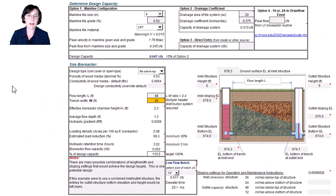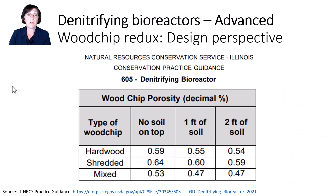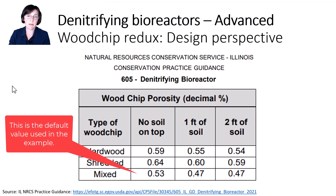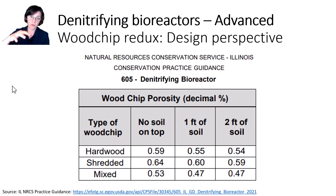Let's take a step back and look at our design model and get some context for what values the NRCS uses. Those values come from a supplemental table. Most of our woodchips have been mixed, so I would use a porosity of 53 percent, but I also want to highlight the higher value for the shredded media used by the NRCS. And you can see that as you add more overburden or compaction on top of those woodchips, they would use a smaller and smaller drainable porosity.